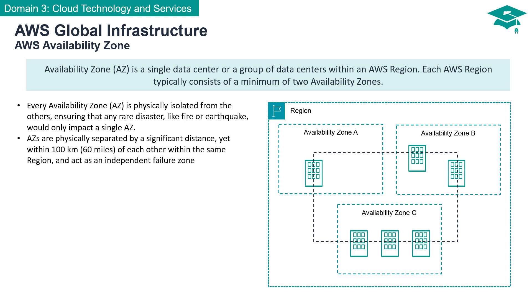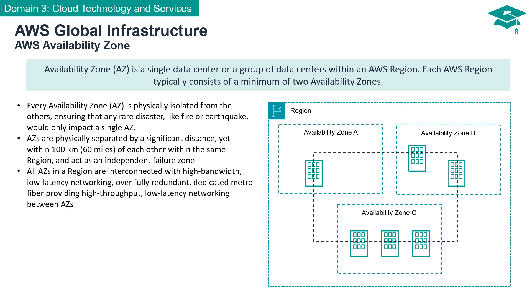AZs are strategically spaced out, typically within 100 kilometers or 60 miles of each other. Despite the geographic distance, all AZs within a region are well connected through a dedicated metro fiber network. This interconnectivity facilitates high bandwidth, low latency networking. All traffic between AZs is not only swift but also encrypted, ensuring data security.